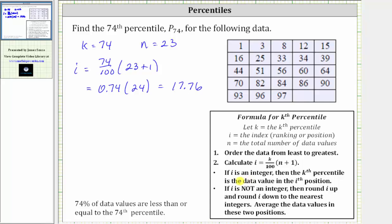Next, if i is an integer, then the kth percentile is the data value in the i-th position. But in our case, i is 17.76, which is not an integer.